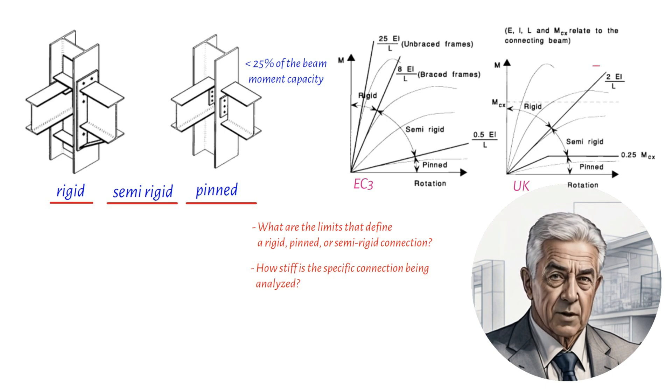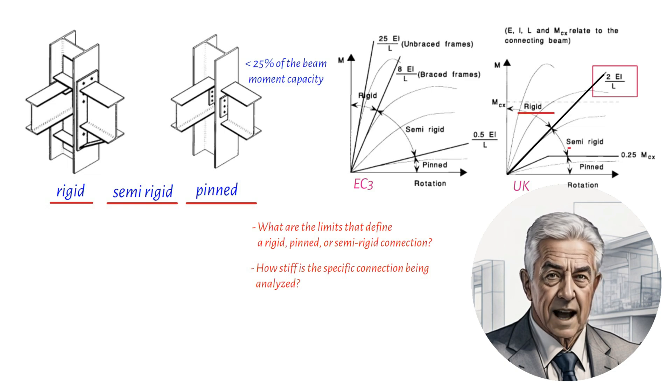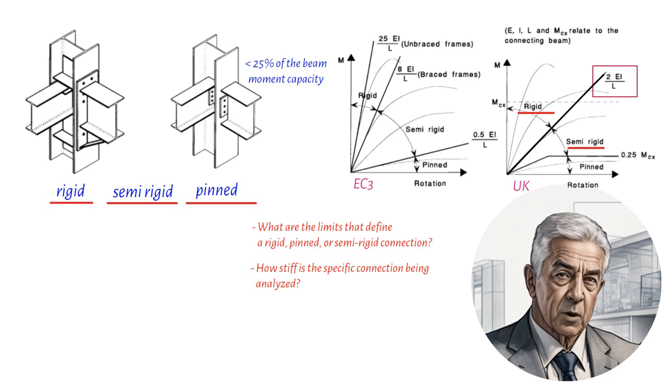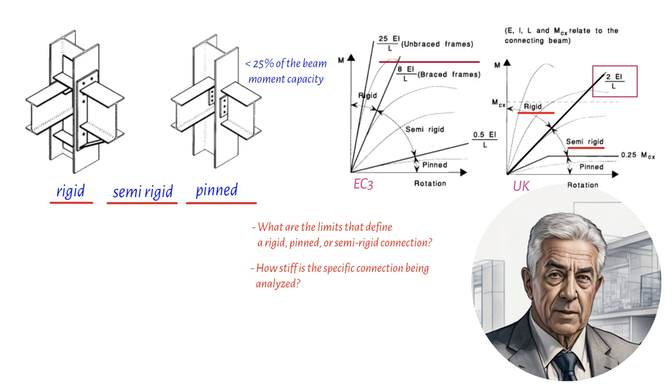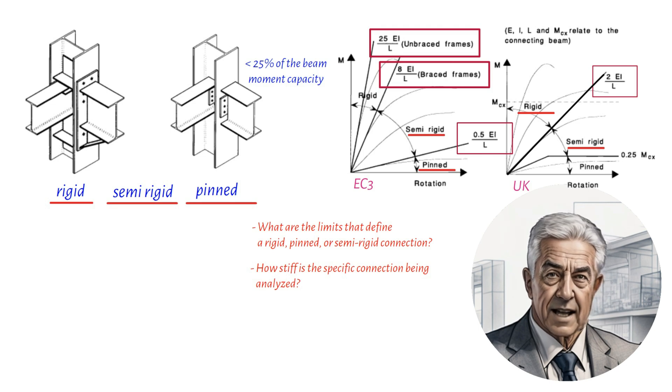while EC3 AnnexJ offers two alternatives: 8 times EI divided by L for braced frames, and 25 times EI divided by L for unbraced frames. The slope of the line between pinned and semi-rigid connections is given as 0.5 times EI divided by L in AnnexJ.